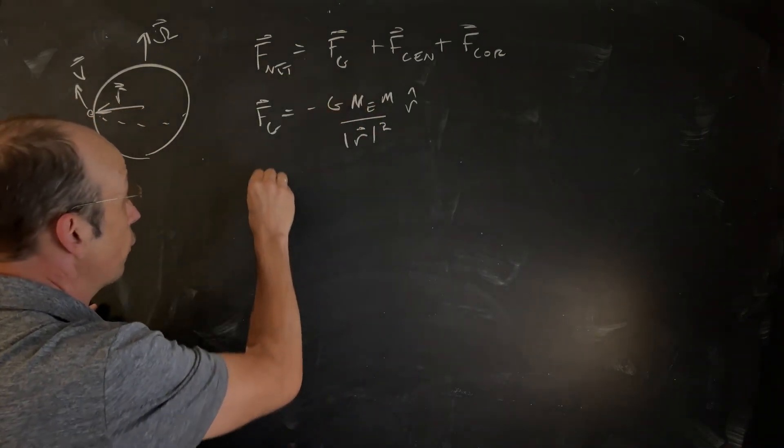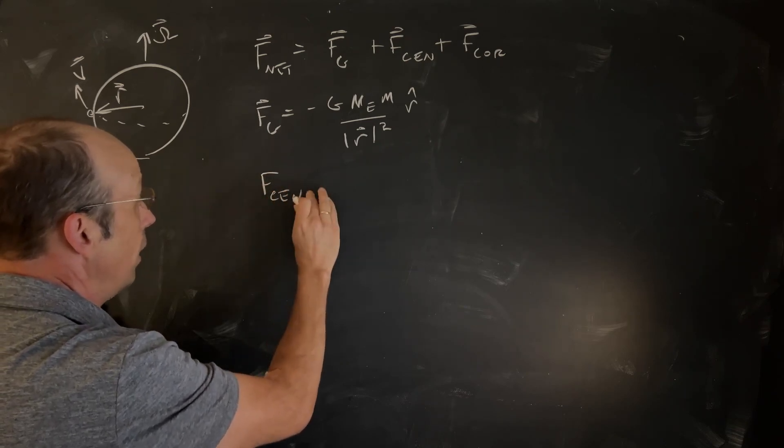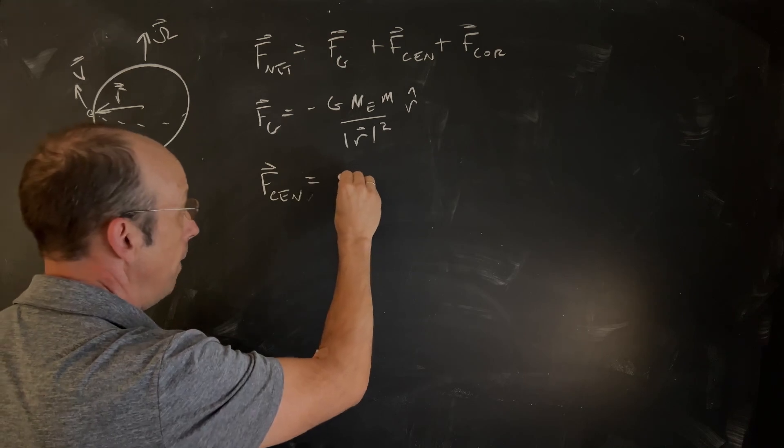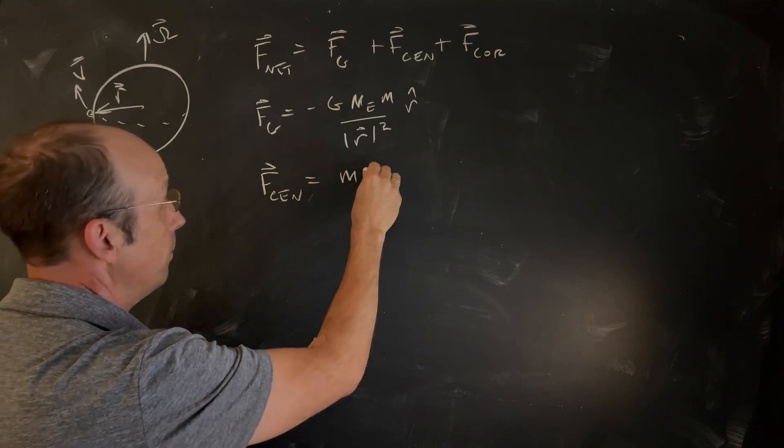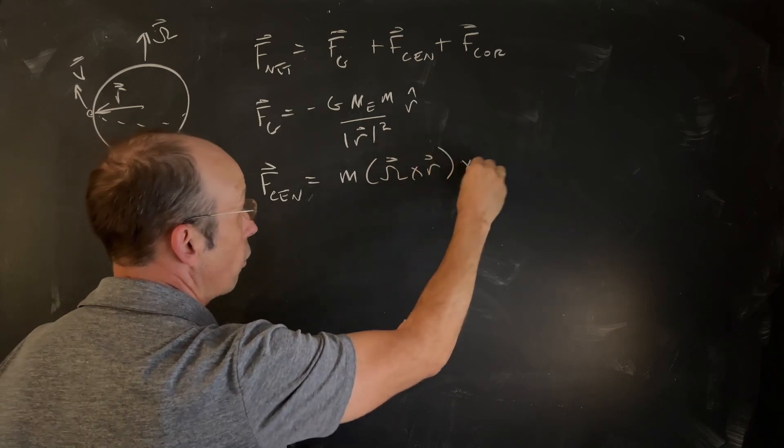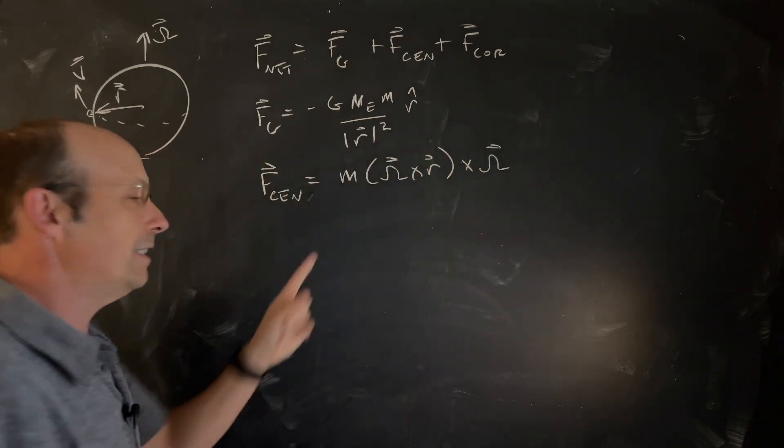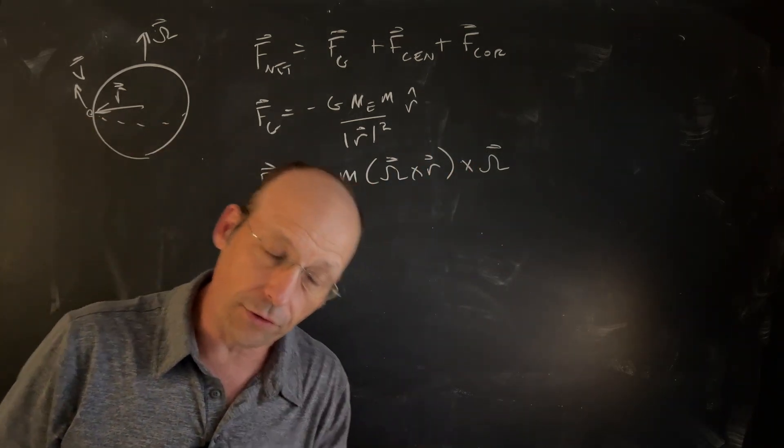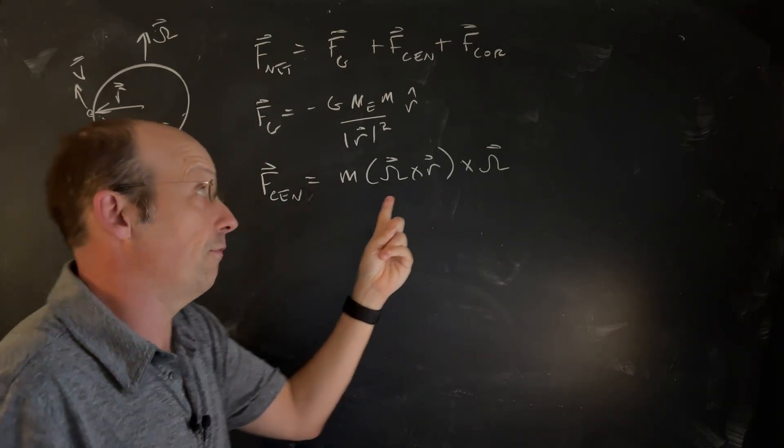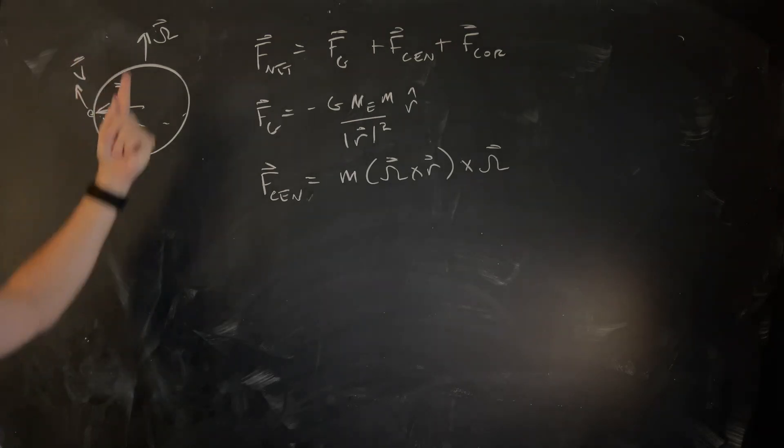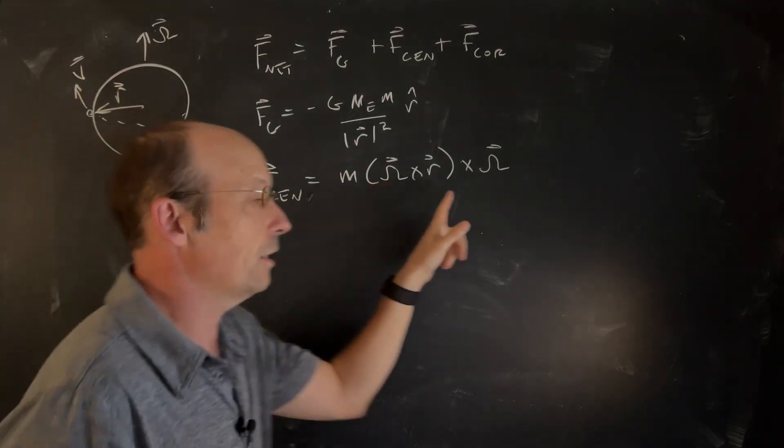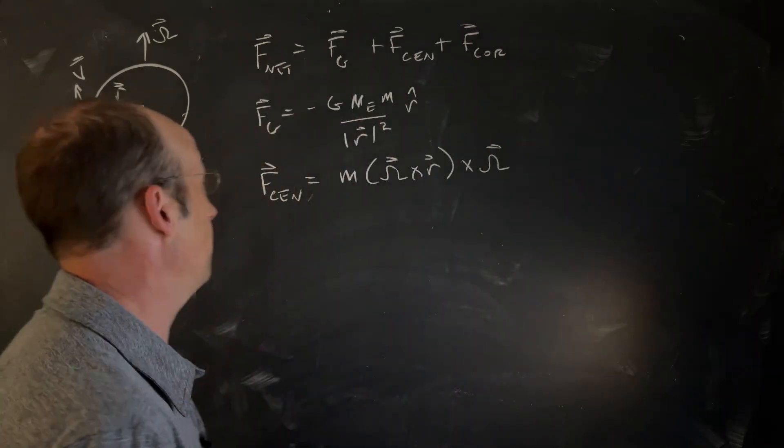The centrifugal force is going to be equal to the mass times omega cross r cross omega. This is the same thing as the centrifugal acceleration m r omega squared, but this gives us a vector. This takes into account the position and the angular velocity vector. We have to do cross products, but Python's going to do it for us, so it's not a big deal.